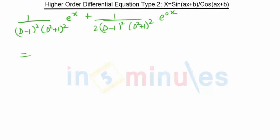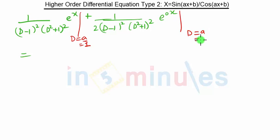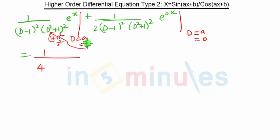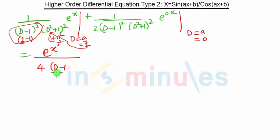For Type 1 we substitute D equal to a. In the first term a is 1, and in the second term a is 0. Substituting D=1: (1²+1)² = 4, but the (D−1)² term becomes (1−1)² = 0, which creates a problem. So we keep that part as it is for now.